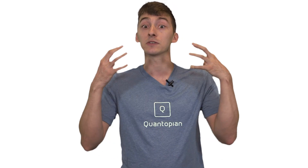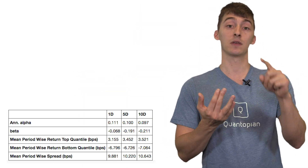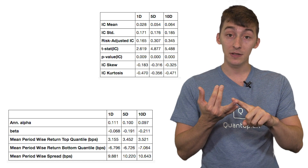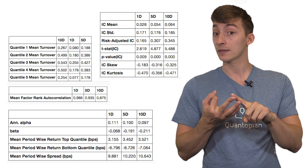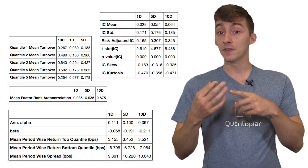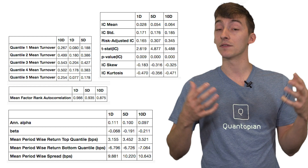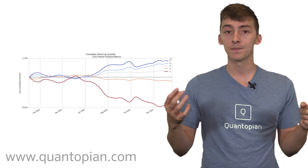And this is what Alphalens lets us actually suss out. Alphalens gives us a full battery of tests — from returns analysis and information analysis to turnover analysis — and this gives us a sense of the predictive power of any individual factor.